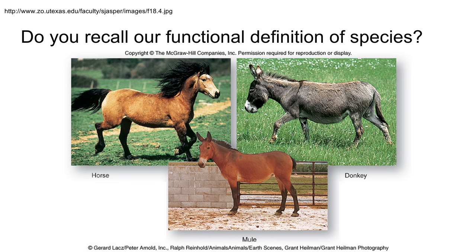In order to proceed we need to remember what species turn out to be. Our functional definition is perfectly flawed — there are lots of issues with it — but it's the one we'll use. Two distinct organisms living in the same area at the same time: if they reproduce and make an offspring that can also reproduce, congratulations, we have the same species. If they cannot reproduce, or cannot make a viable reproducing offspring, you don't have the same species. That's where the horse and donkey come in — they produce a mule, but the mule cannot reproduce, so horse and donkey are not the same species under this definition.